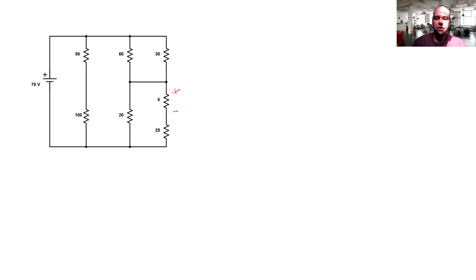I have a known voltage, 70 volts. I want to know the voltage across the five ohm resistor. So voltage divider is probably a good tool to do this. My question is, how do I start to apply voltage divider to this circuit?